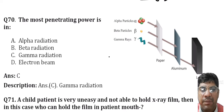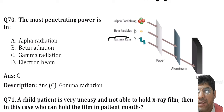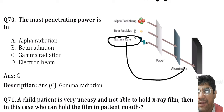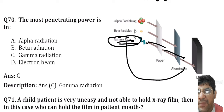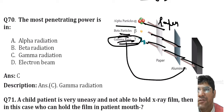The most penetrating power is in gamma rays. Gamma rays can penetrate paper, aluminum, and lead, whereas beta particles penetrate only paper and aluminum, and alpha particles penetrate only paper. So the most penetrating of the three is gamma rays.